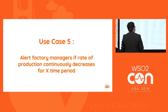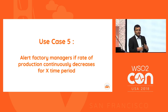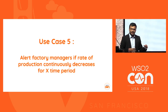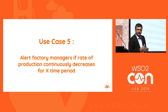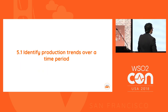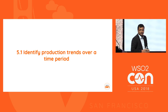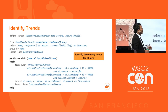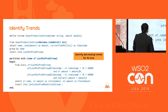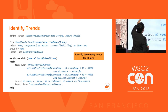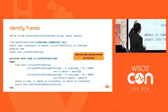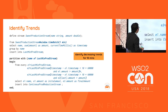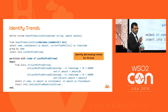The fifth use case is: alert factory managers if the production continuously decreases for a time period. If production is reducing over time, alert the manager that something is wrong. To identify this, first identify the production trend over a time period. We have a sweet production stream; from it, every one minute, we calculate the sum grouped by sweet type and insert into a stream called 'last minute production stream.'